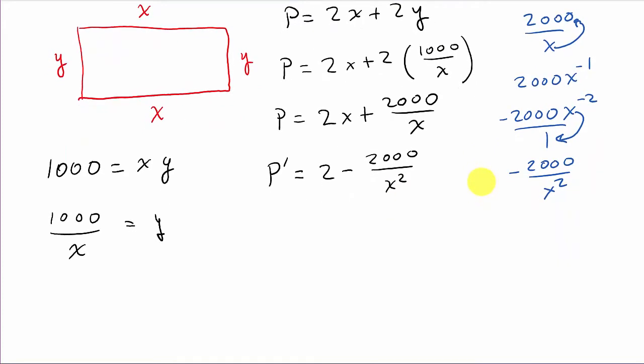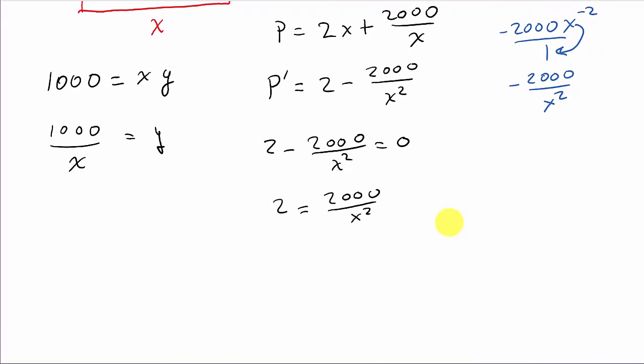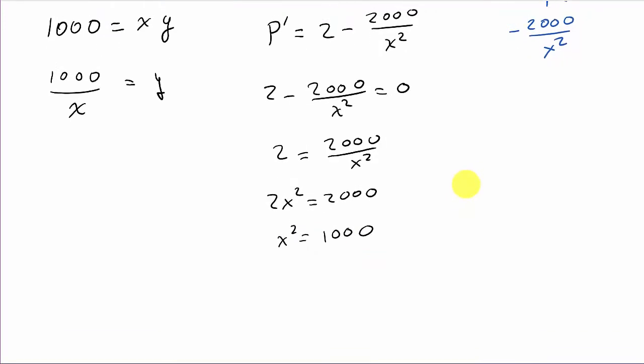Alright, so now we need to set this equal to 0. So, I have 2 minus 2000 over x squared equals 0. So, 2 is equal to 2000 over x squared. Alright. So, that's going to give me 2x squared equals 2000. So, x squared is equal to 1000. And so, I'm going to get x is equal to plus or minus the square root of 1000.